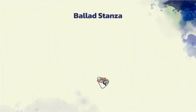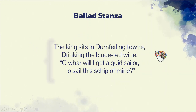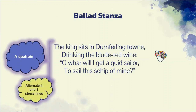About ballad stanzas: stanzas are structures of lines in a poem — the paragraphs in a poem are called stanzas. In English we have different forms of stanza like couplets, triplets, and quatrains. In the ballad's case it is a quatrain, meaning the stanzas are generally composed of four lines. These quatrains have alternating four and three stress lines — the number of stresses in the line are either four or three.